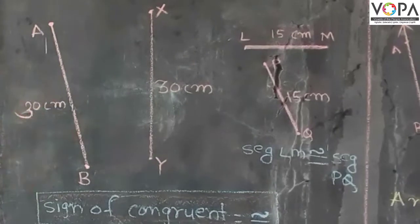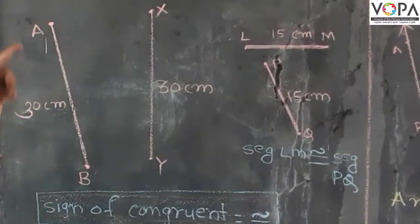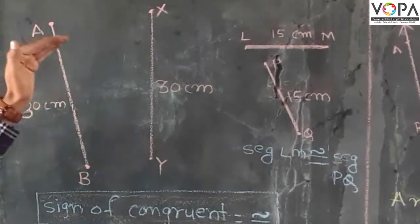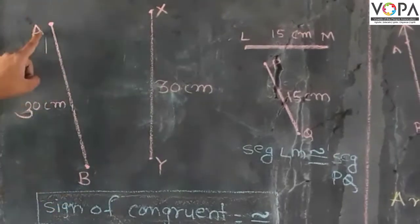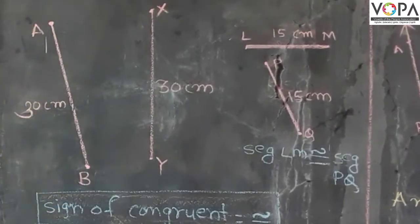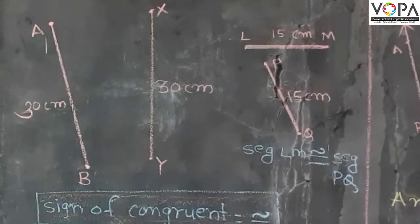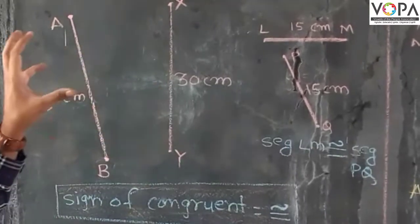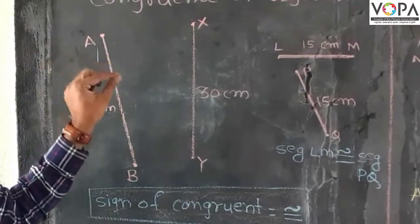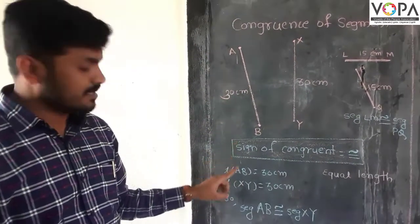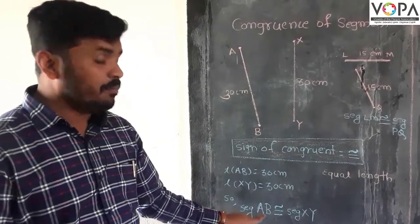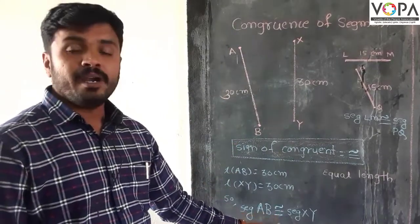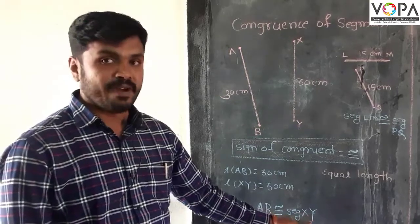But here, the length of segment AB is equal to 30 centimeters and length of segment XY is equal to 30 centimeters. That means AB and XY are equal in their lengths, so that's why we can say that segment AB is congruent with segment XY.